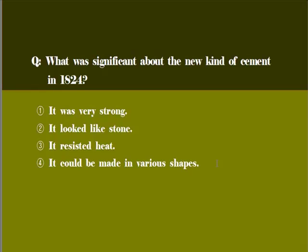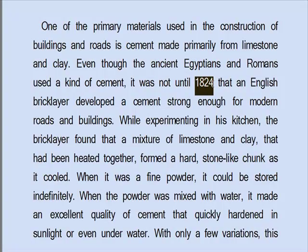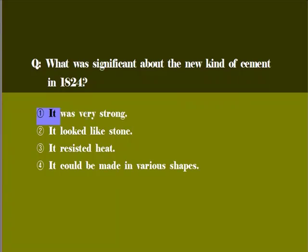문제 확인해 보겠습니다. 'What was significant about the new kind of cement in 1824?' 1824년 만들어진 새로운 종류의 시멘트에 대해서 무엇이 의미가 있었는가? 즉, 무엇이 중요했는가? 첫 번째, 'it was very strong.' 그것은 대단히 강력했다. 두 번째, 'it looked like a stone.' 그것은 돌처럼 보였다. 세 번째, 'it resisted heat.' 'resist', 저항하다, 견디다. 'heat', 열이죠. 그것은 열을 견딜 수 있었다. 네 번째, 'it could be made in various shapes.' 그것은 다양한 모양으로 만들어질 수 있었다. 1824년, 영국의 어느 벽돌공이 시멘트를 개발했죠. 바로 그것은 현대의 도로 그리고 건물에 쓰일 수 있을 정도로 아주 강력한 시멘트였습니다. 따라서 여러분들은 첫 번째가 정답입니다.